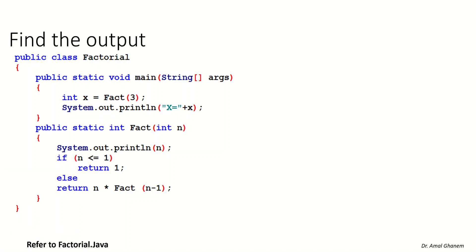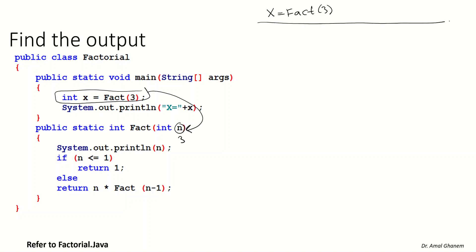From the main, we find the value of x equal to the method fact(3). So from the main, we go to the method and send the value of n as 3. This is the first call of the method with n equal to 3. Now we need to execute all the statements in the method, the first of which is to output n.